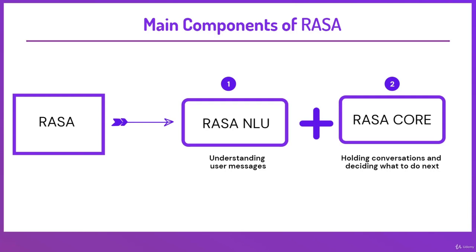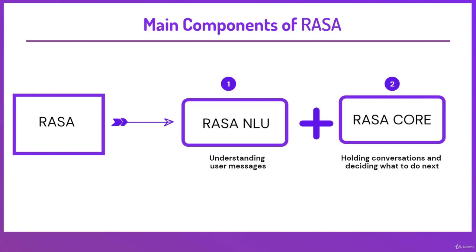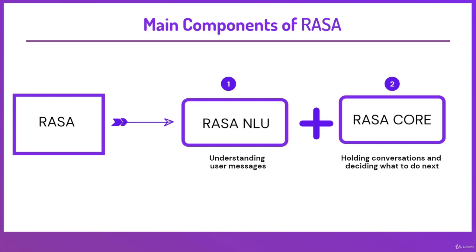Rasa itself is a composition of two parts: Rasa NLU and Rasa Core. Rasa NLU is responsible for understanding the user messages, and Rasa Core is used for holding the conversation and deciding what to do next. Rasa NLU detects intent and entities in the user message and has different components for recognizing them. In the backend, Rasa NLU uses two libraries: spaCy, which needs to be installed separately, and TensorFlow, which is available in Rasa by default.